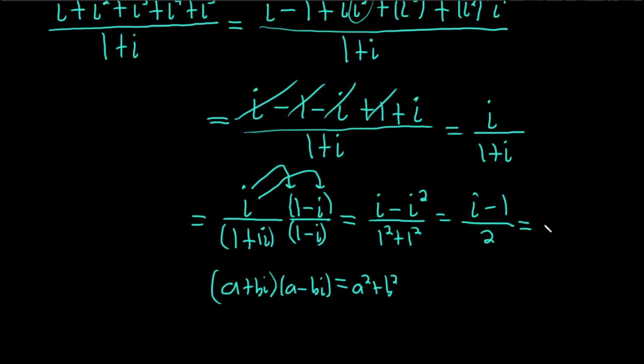This is i minus 1 over 2. And we can break this up as i over 2 minus 1 over 2. And typically, you know, we write our answers in the form a plus bi. So now what we can do is we can write this. Ooh, ooh, I messed up here.